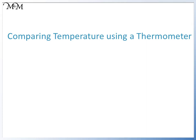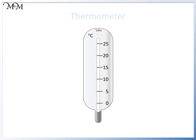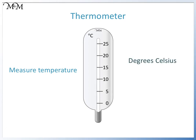Welcome to our lesson on comparing temperature using a thermometer. Here we have a thermometer. We use it to measure temperature. We measure temperature in degrees Celsius, which we also call degrees centigrade. We abbreviate it to degrees C.